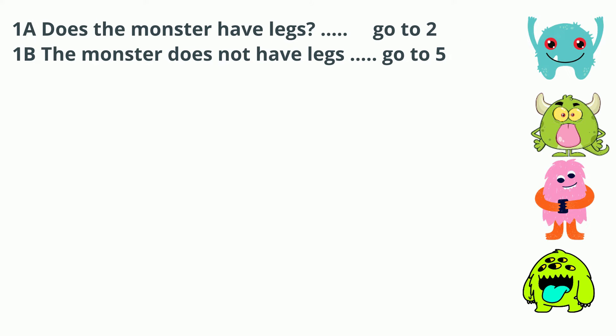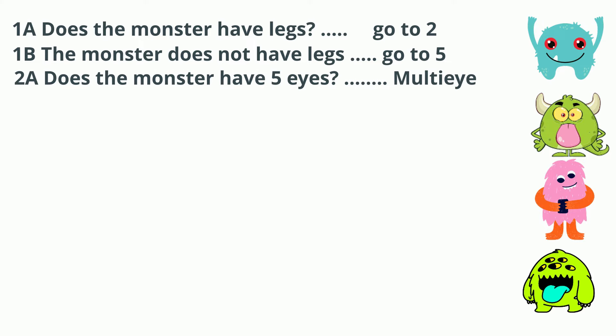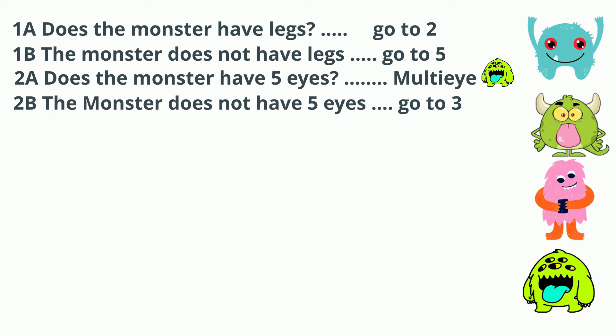Now let's go to question 2. We have 4 monsters and we need to start sorting them, so let's go with the number of eyes. 2A will be: the monster has 5 eyes, and the monster's name is Multi Eye. 2B: the monster does not have 5 eyes, and they will go to 3.